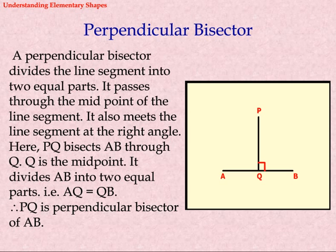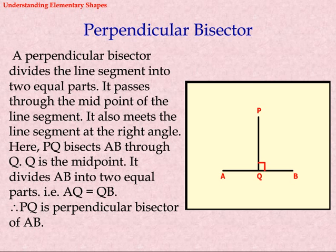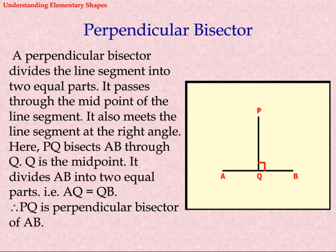Perpendicular bisector: A perpendicular bisector divides the line segment into two equal parts. It passes through the midpoint of the line segment and also meets the line segment at a right angle. Here, PQ bisects AB at Q. Q is the midpoint. It divides AB into two equal parts, that is AQ equals QB. Therefore PQ is the perpendicular bisector of AB.